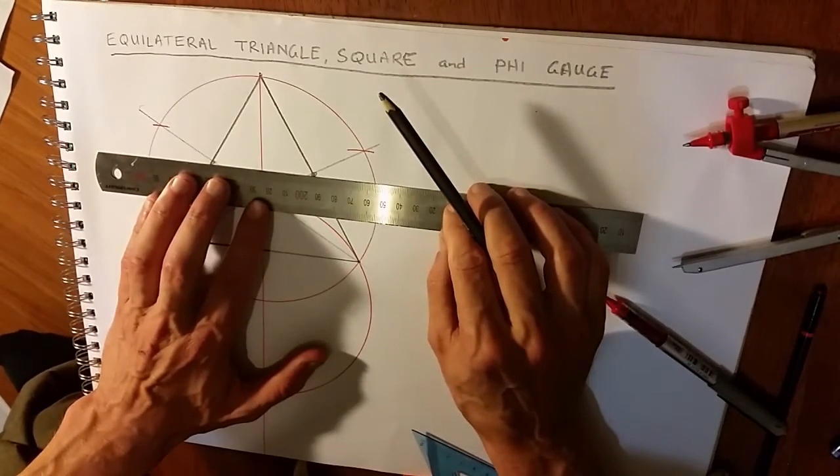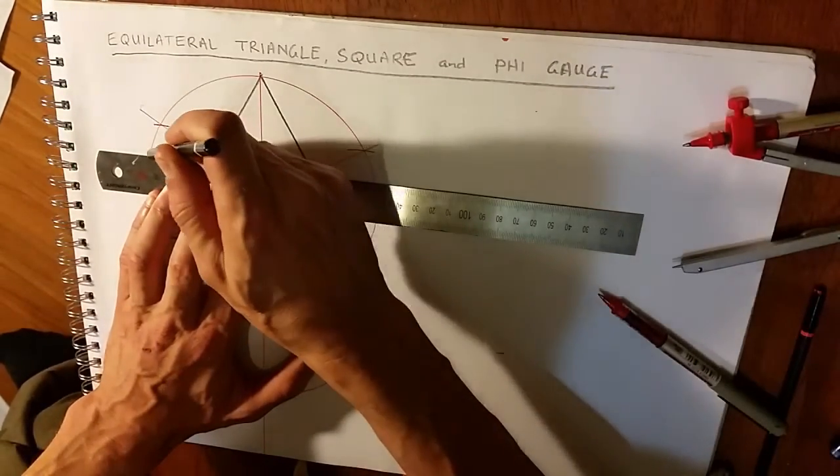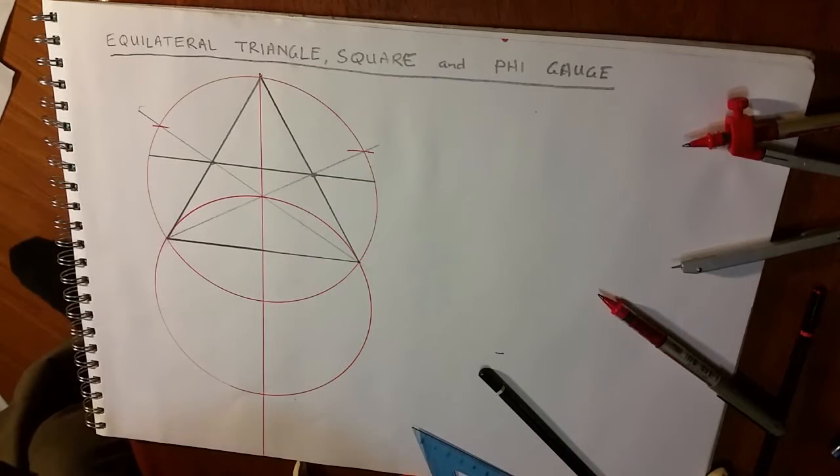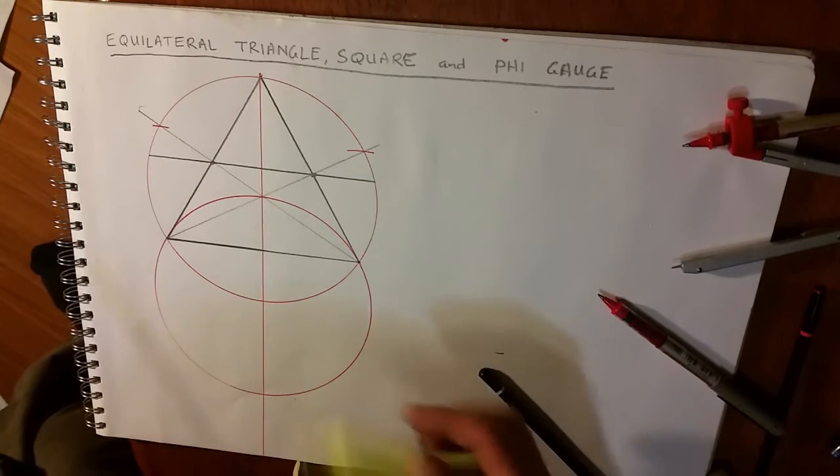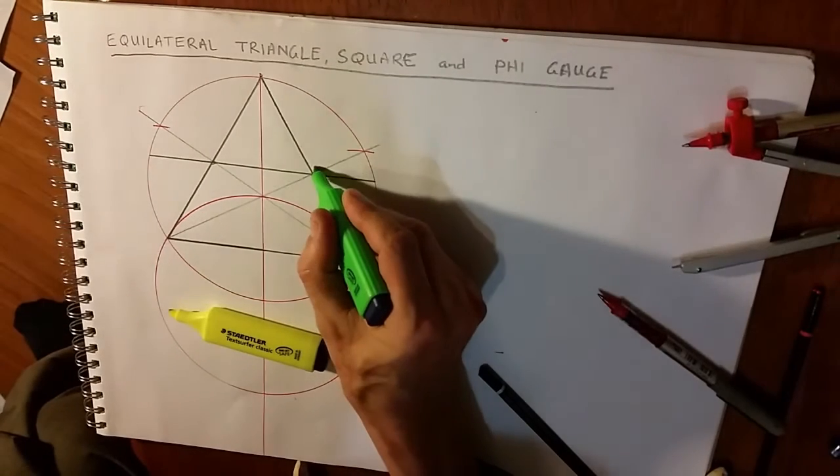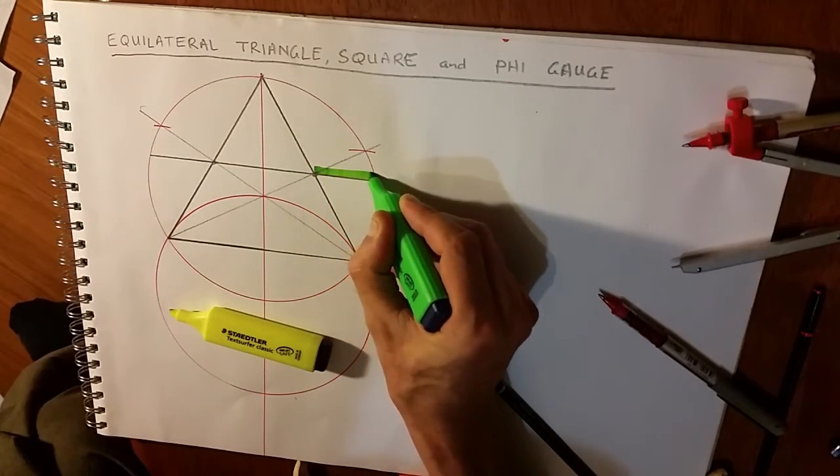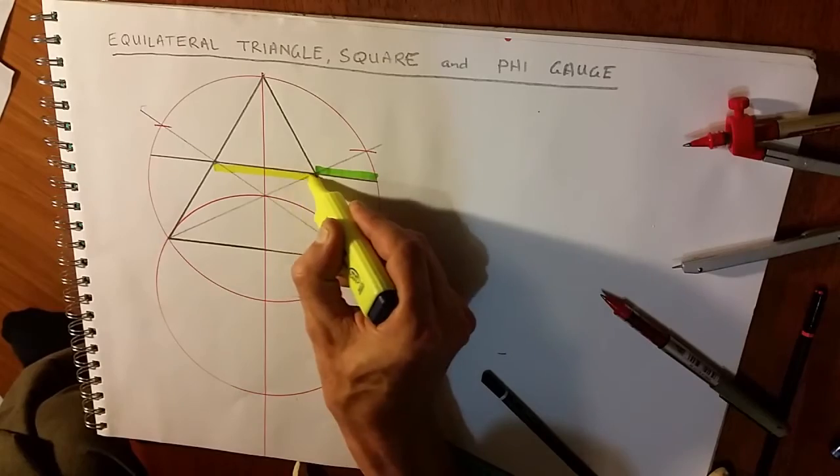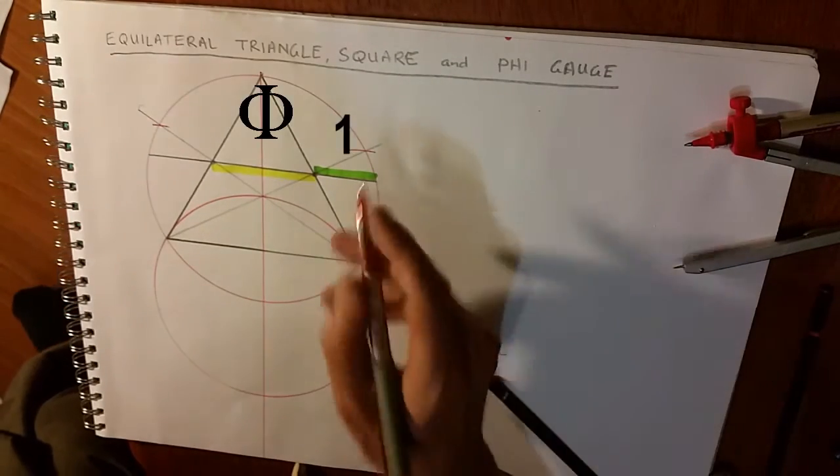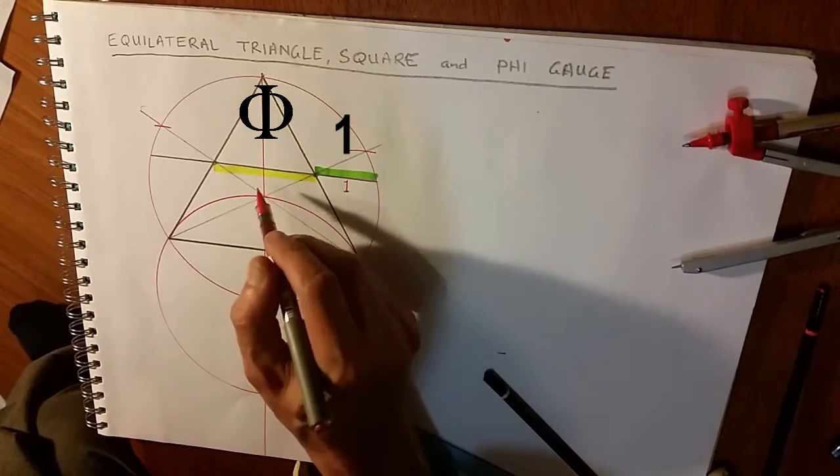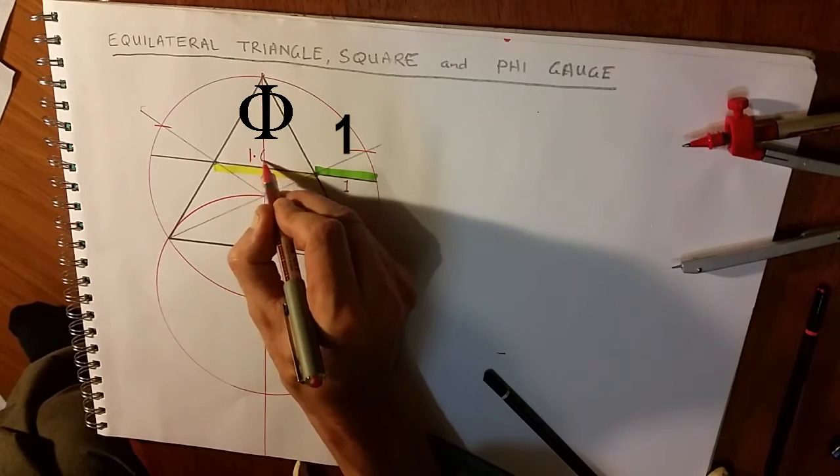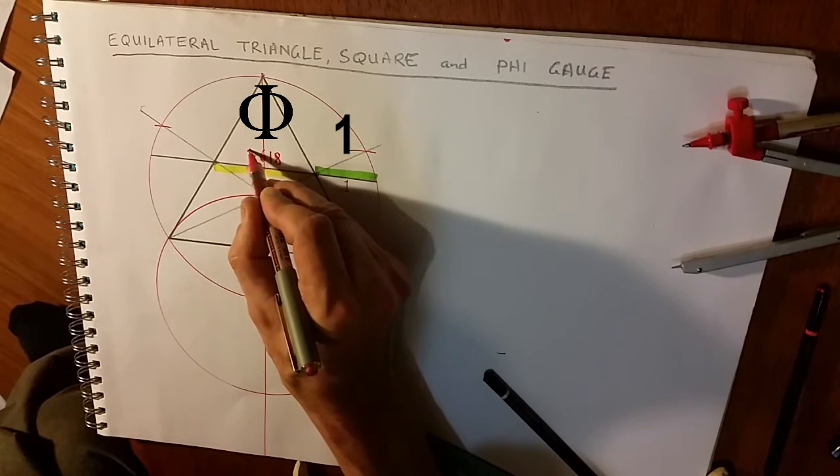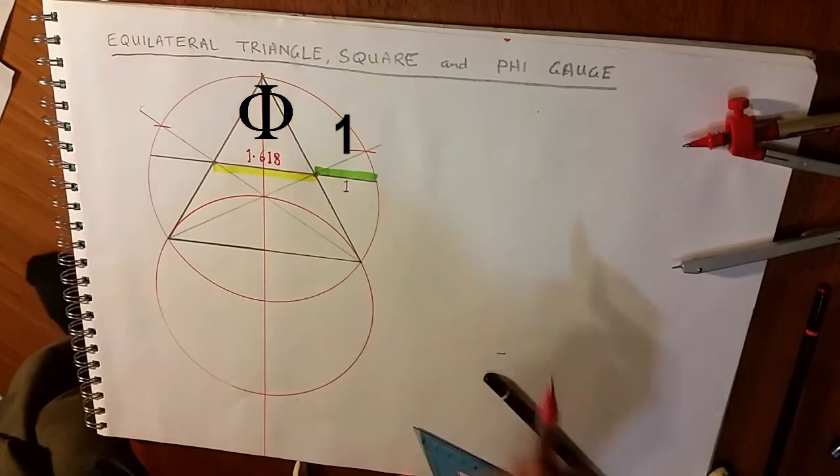So now with our straight edge on those two, now we've created a phi ratio. Meaning that this is 1, then this is 1.618. Alright.